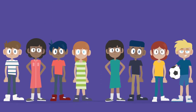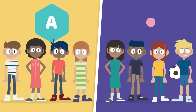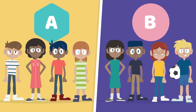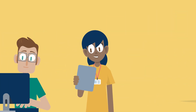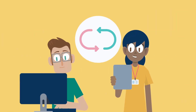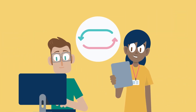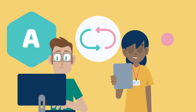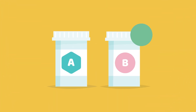All the children who agree to take part have an equal 50-50 chance of getting either medicine. Researchers can then compare the results from children who got Medicine A with the children who got Medicine B, to work out which medicine is better.